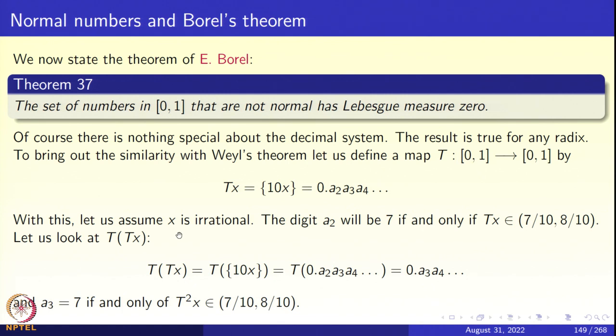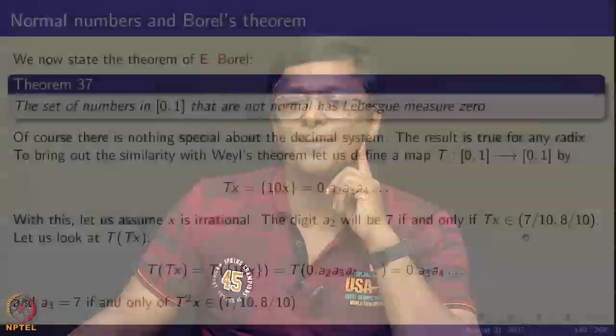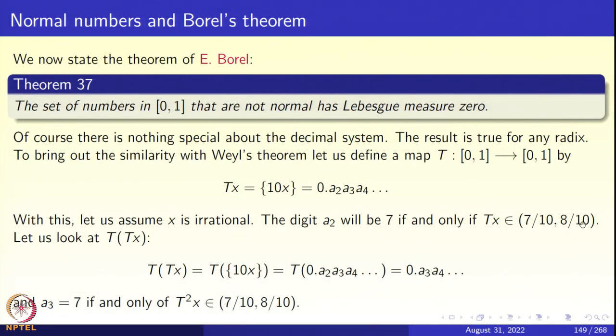Let us assume that this number x is irrational because I already told you that very few rational numbers are going to be normal. We may as well assume that x is irrational. Well, rational numbers anyway have Lebesgue measure 0 and so the digit a₂ will be 7 if and only if Tx lands up in the subinterval [7/10, 8/10]. Remember that if you take a number between 0 and 1, the first digit after the decimal point will be 7 if and only if that point lies in the interval [7/10, 8/10]. I have just taken 7 for simplicity and for illustration purposes. So a₂ will be 7 if and only if Tx lies in this interval.